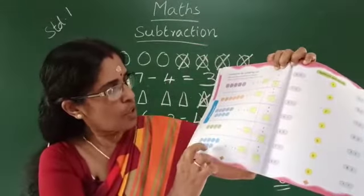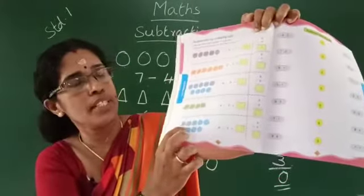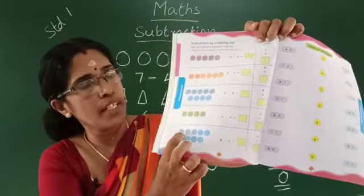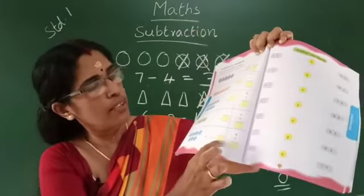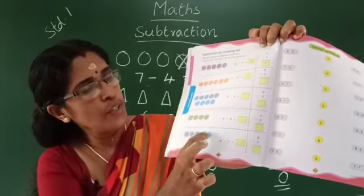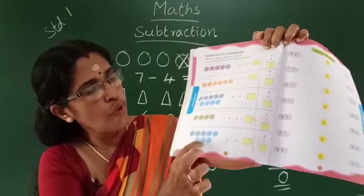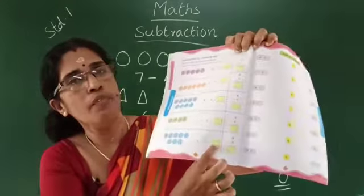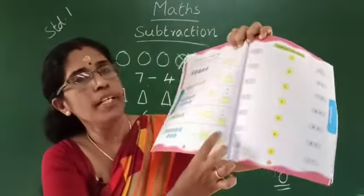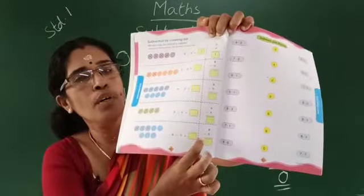Next, 8 minus 3. There are 8 pictures and we cross out 3. From the remaining: 1, 2, 3, 4, 5. 8 minus 3 is equal to 5.